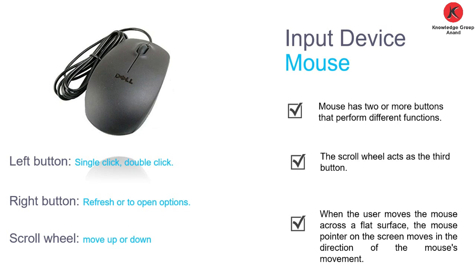The second input device is the mouse. A mouse has two or three buttons, and in the center a scroll wheel acts as a third button. When the user moves the mouse across a flat surface, the pointer on the screen moves in the direction of the mouse movement. The left button is used for single click or double click, the right button is used to refresh or open functions, and the scroll wheel is used to scroll pages up or down.